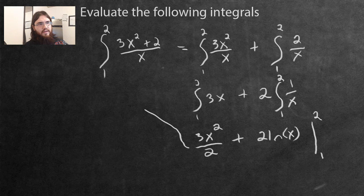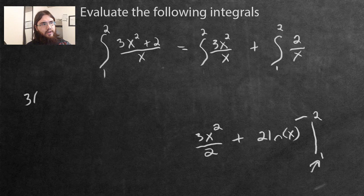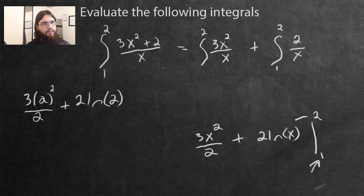So I'm just going to take all of this and work over here. The next step is to substitute the two in for all of the x values, then subtract it by when you substitute the one at the bottom, the lower limit. Three, two squared, divided by two, add two ln of two, subtract, and we have a one down there. So substituting the one in for this little new function we have here.